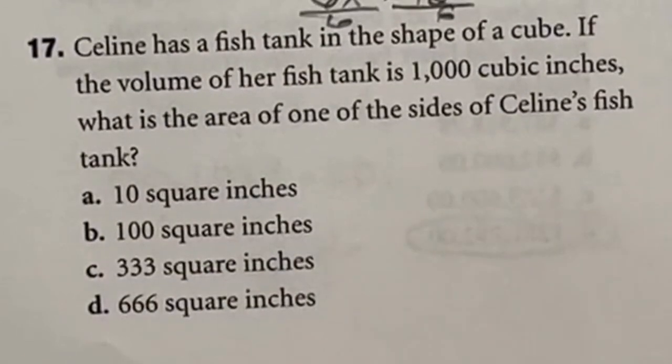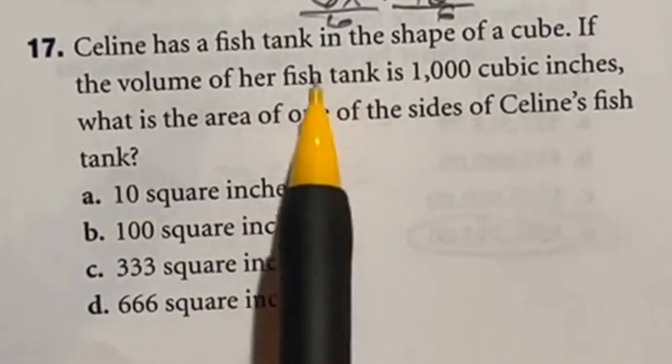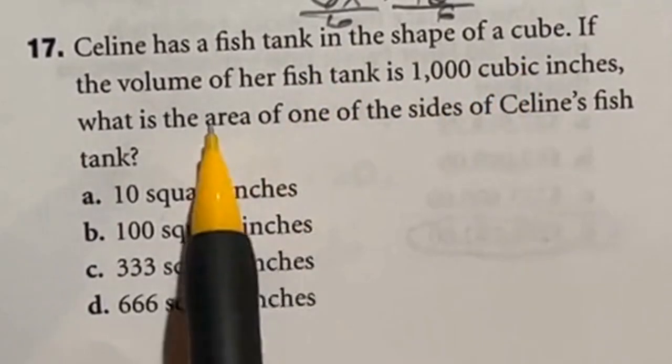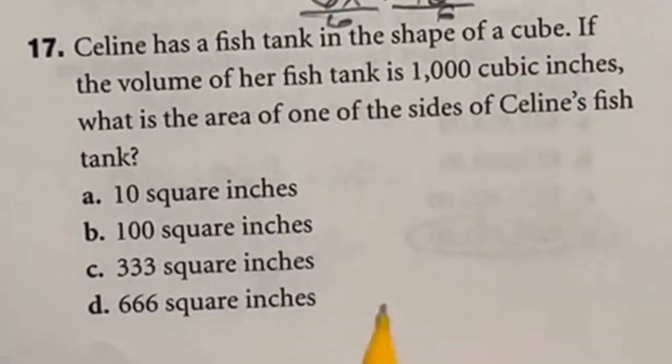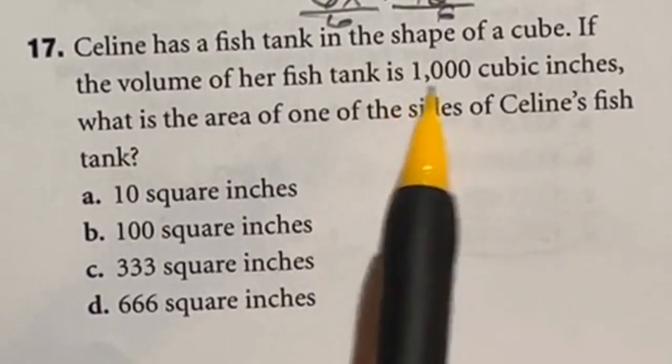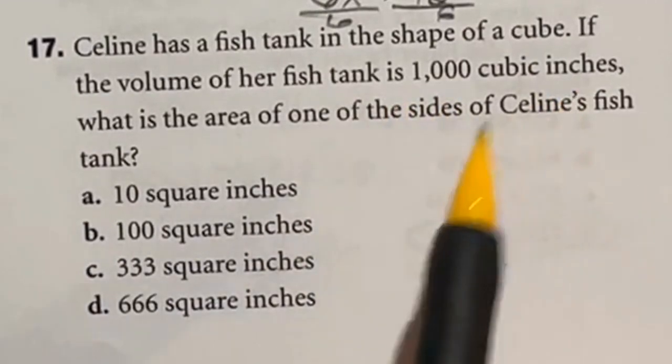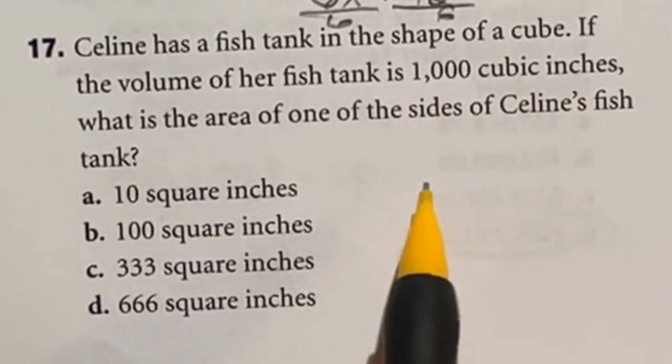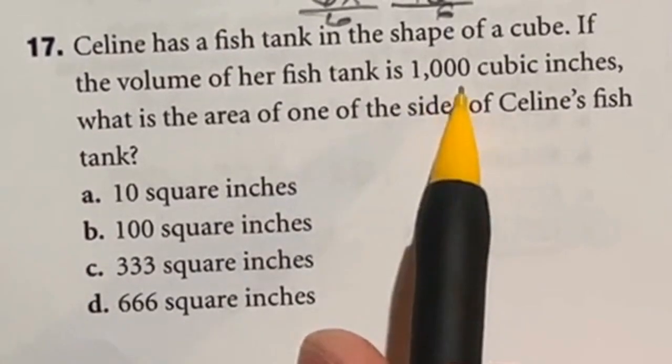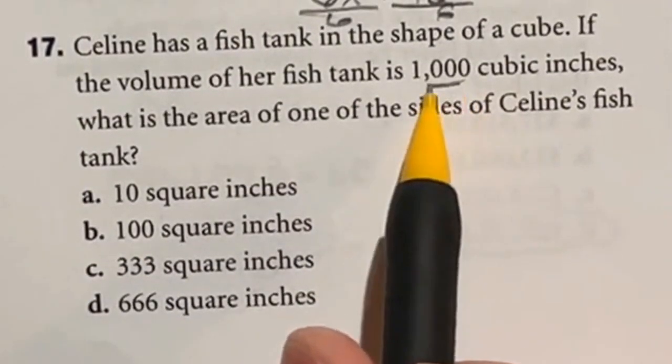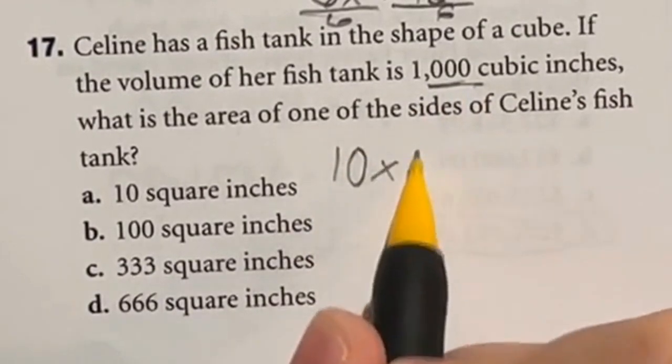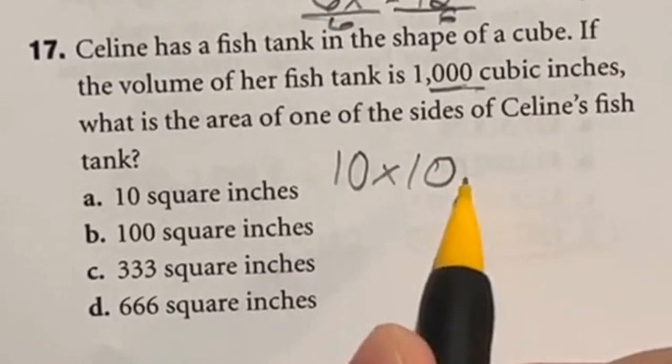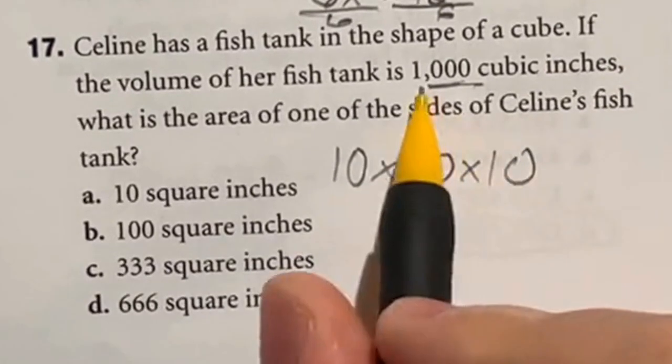So for number 17 it says that there is a fish tank that's a cube meaning all sides are the same and the volume of that is 1,000 cubic inches. So what's the area of one side? Well this is a cube and it's 1,000 cubic inches. We need to find what number times itself three times will give us 1,000. Well there are three zeros there. So I'm going to assume 10. Let's double check that. 10 times 10 is going to give me 100 times another 10 will give me 1,000.